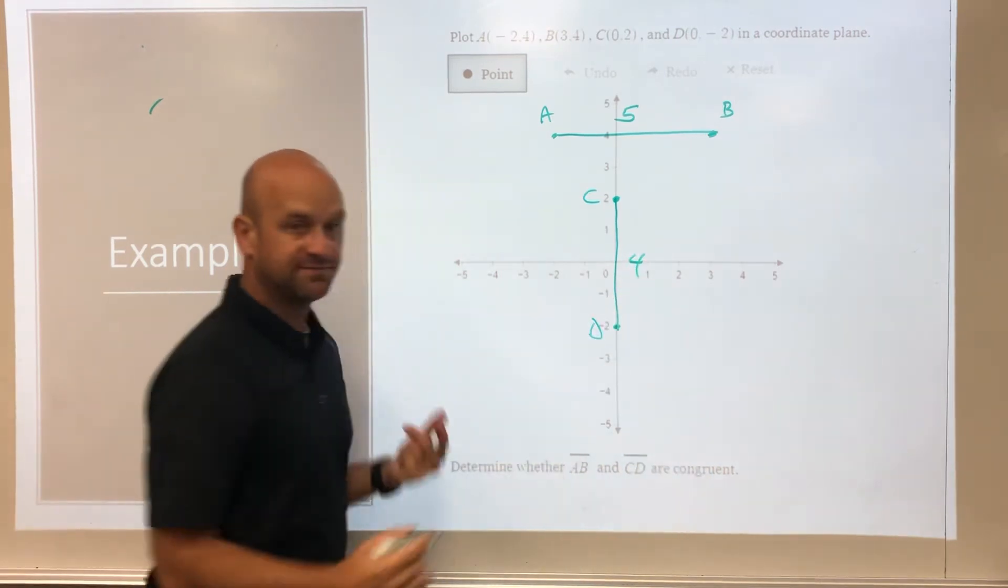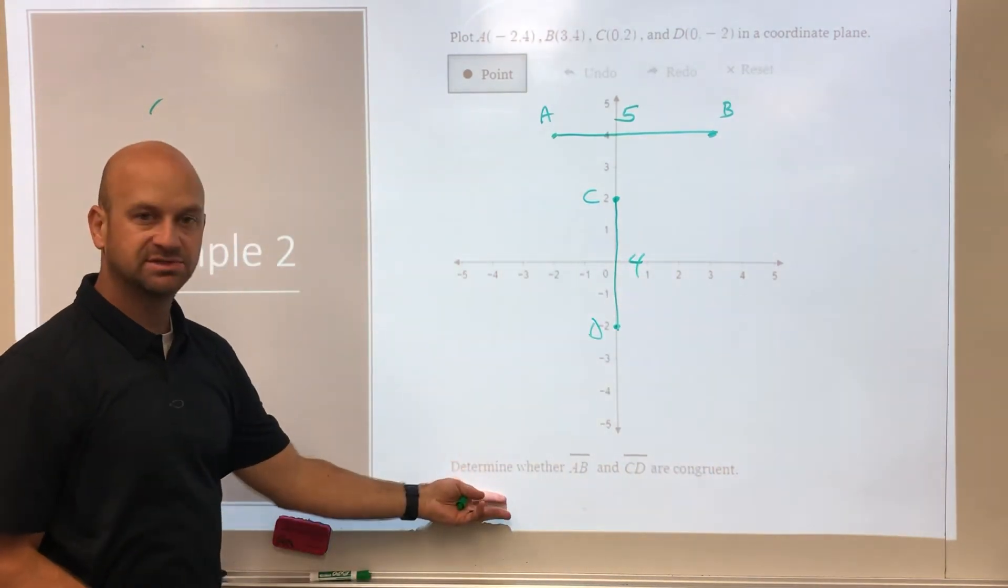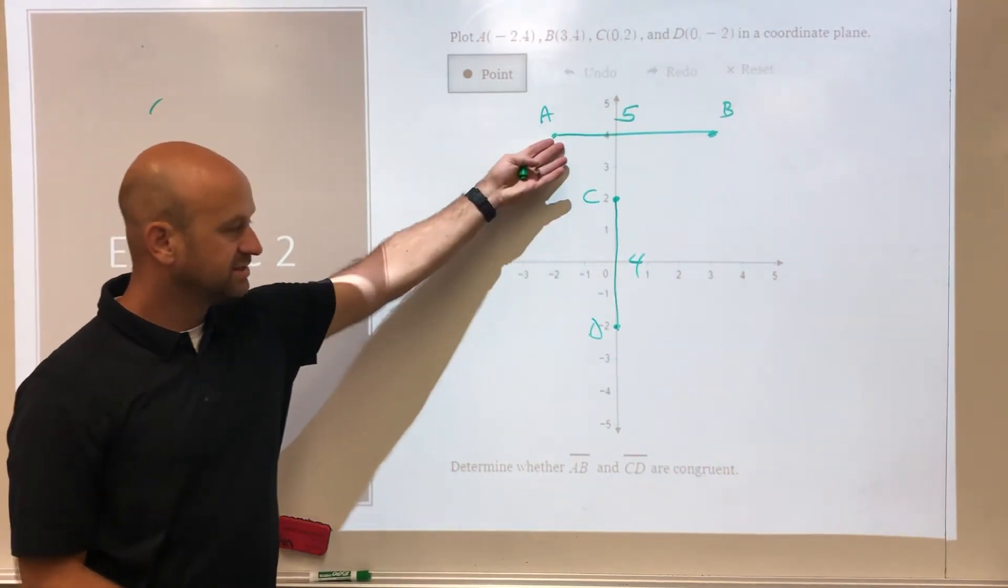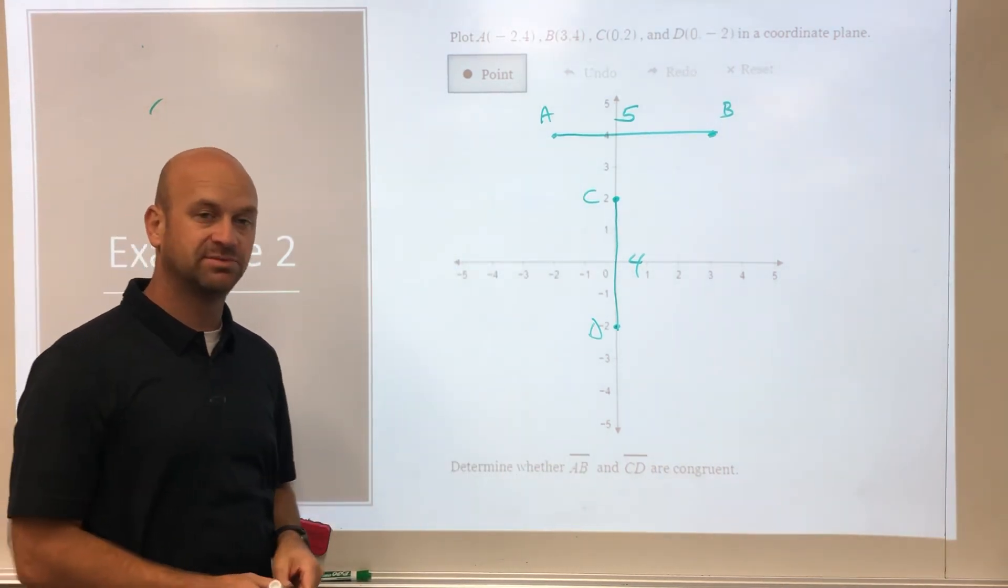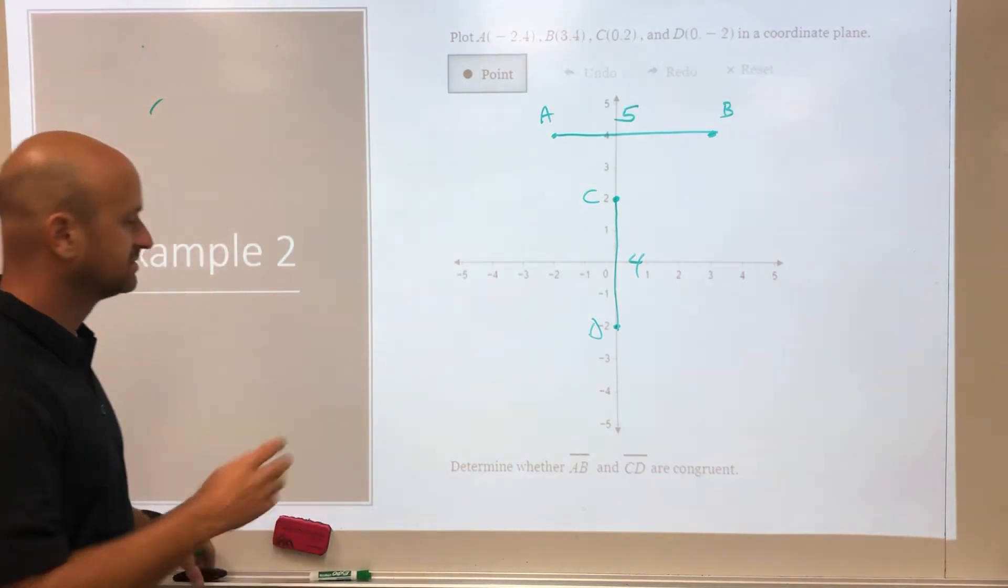So are these two things congruent? They are not. This has a length of five, this has a length of four. If they were congruent they would be identical in length.